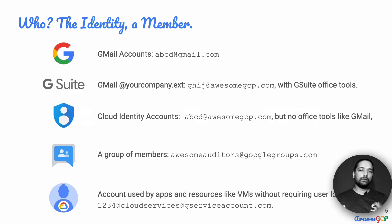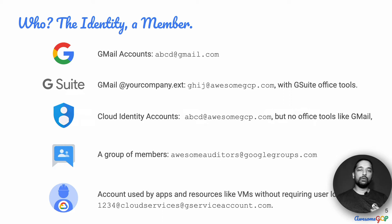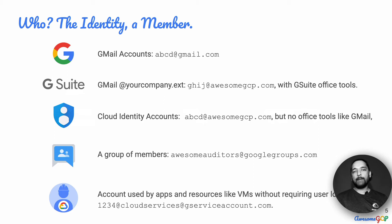For companies that already have an existing office suite but still want to adopt Google Cloud, they can use Cloud Identity. You still get an email address at yourcompany.com, but you do not get access to office tools like Slides, Sheets, and Docs. A group of members can be put together in a Google Group. All four of these require a human actor to log in. But when machines need to talk to each other — say for a cron job running a backup at 3am automatically — you use the fifth option: a service account.